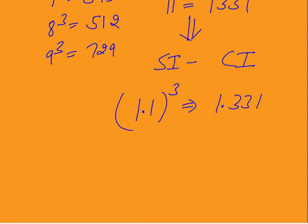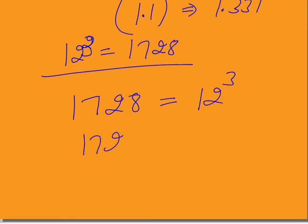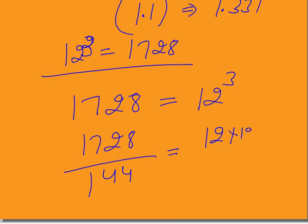Knowing 11 cubed helps you solve compound interest questions faster. 12 cubed is 1728 — whenever 1728 appears, it is 12 cubed. For example, 1728 divided by 144: since 1728 is 12 cubed and 144 is 12 squared, this equals 12 times 12 times 12 divided by 12 times 12, so the answer is 12.